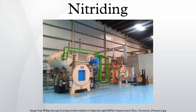Nitriding is a heat-treating process that diffuses nitrogen into the surface of a metal to create a case-hardened surface. These processes are most commonly used on low-carbon, low-alloy steels. However, they are also used on medium and high-carbon steels, titanium, aluminum and molybdenum. Recently, nitriding was used to generate a unique duplex microstructure, known to be associated with strongly enhanced mechanical properties.